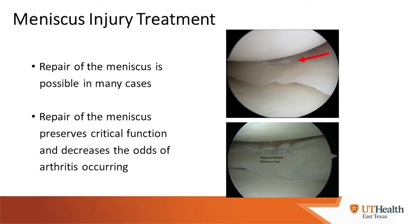If meniscus tears occur in a different location caused by acute injury or ligament instability with no significant arthritis, we think about repairing the meniscus to preserve the long-term health of the knee. The upper picture shows a vertical tear through the meniscus, and the lower picture shows sutures across that tear for repair. Success rate is fairly good with ACL reconstruction and reasonable without — we always try to preserve it in someone with normal cartilage.